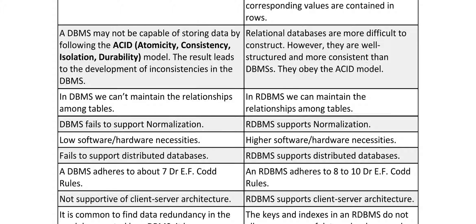DBMS cannot maintain relationships among tables — there are no primary key or foreign key concepts. But in RDBMS, relationships between tables can be maintained. For example, using an EMP table and a DEPARTMENT table, we can maintain a relationship via the employee number — EMP number as primary key in the EMP table and as foreign key in the DEPARTMENT table.